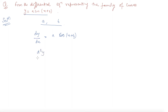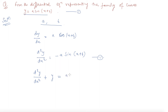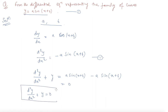And if I differentiate this equation again, what I will get is d²y/dx² = −a·sin(x + b). If I add this equation and the original equation, you will see that d²y/dx² + y = a·sin(x + b) − a·sin(x + b) = 0. So I can write the differential equation as d²y/dx² + y = 0. This is our answer.